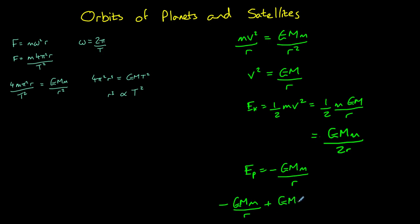GMm divided by 2r, which leaves us with a total energy of minus GMm divided by 2r. This equation tells us the total energy needed for an object to remain in orbit around the planet.